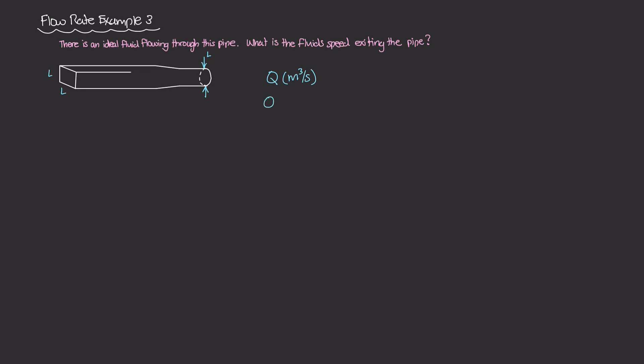In other words, Q1, which is the flow rate at the square end, so this is Q1 right here, that's going to be equal to Q2, which is right here. So the flow rate entering is going to equal the flow rate exiting.